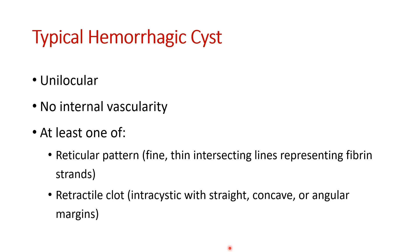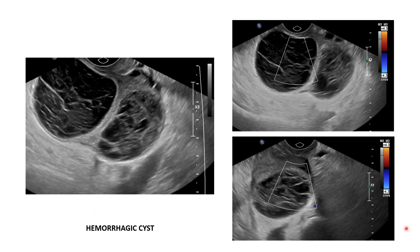A typical hemorrhagic cyst is unilocular, does not contain internal vascularity, and should contain at least one of these: the reticular pattern, mesh-like fibrin, or a retractile clot. There are two hemorrhagic cysts in the same ovary in this patient, with a reticular pattern inside like a meshwork without any vascularity. These are two typical hemorrhagic cysts.